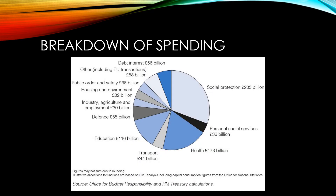By far the biggest area of spending for the UK government is social protection. This refers to the money spent on our system of welfare payments such as those payments to the unemployed, pensioners and the long-term ill. Health and education are the next two biggest areas of UK government spending, which is why government policies in these areas tend to attract so much attention.